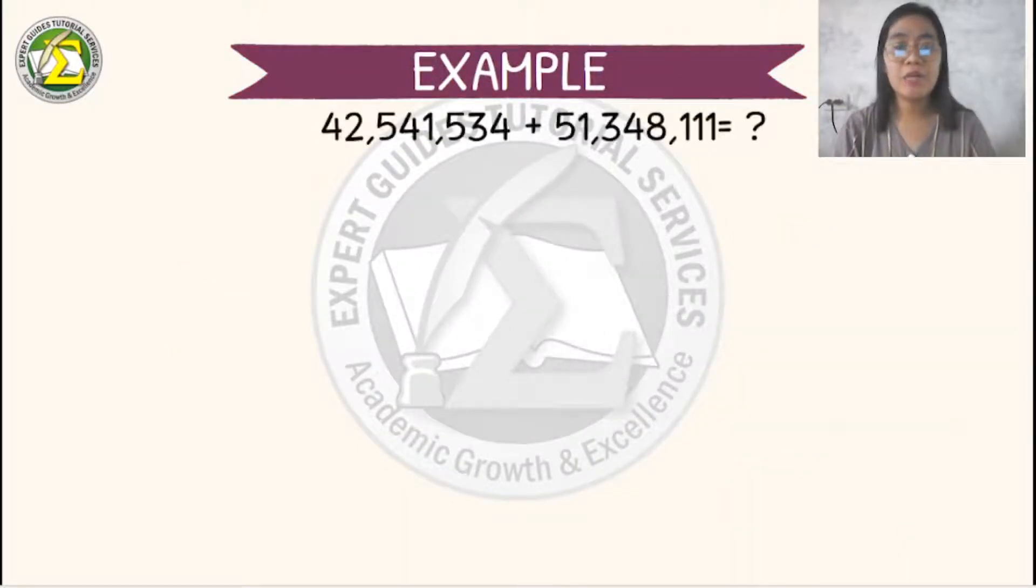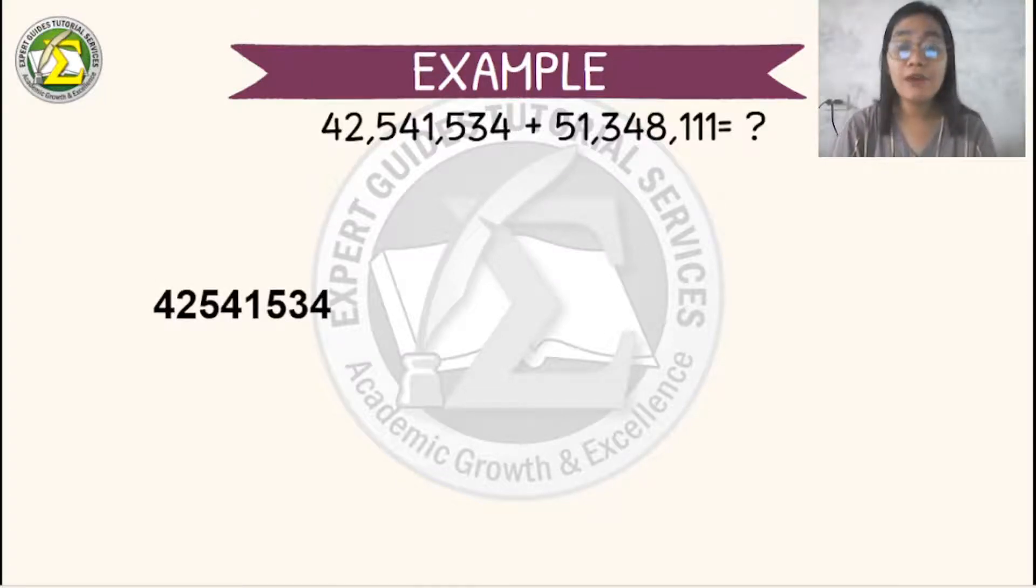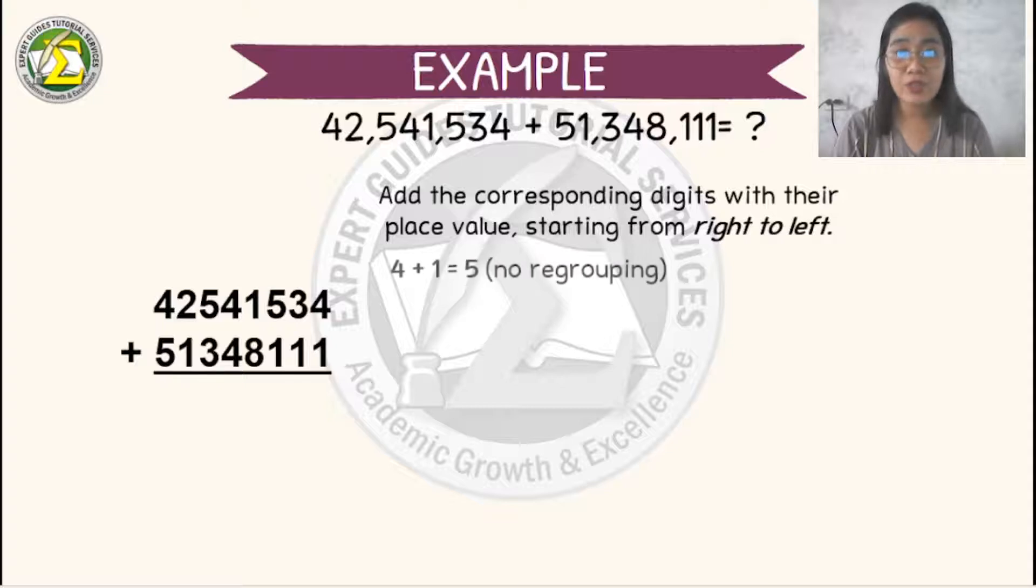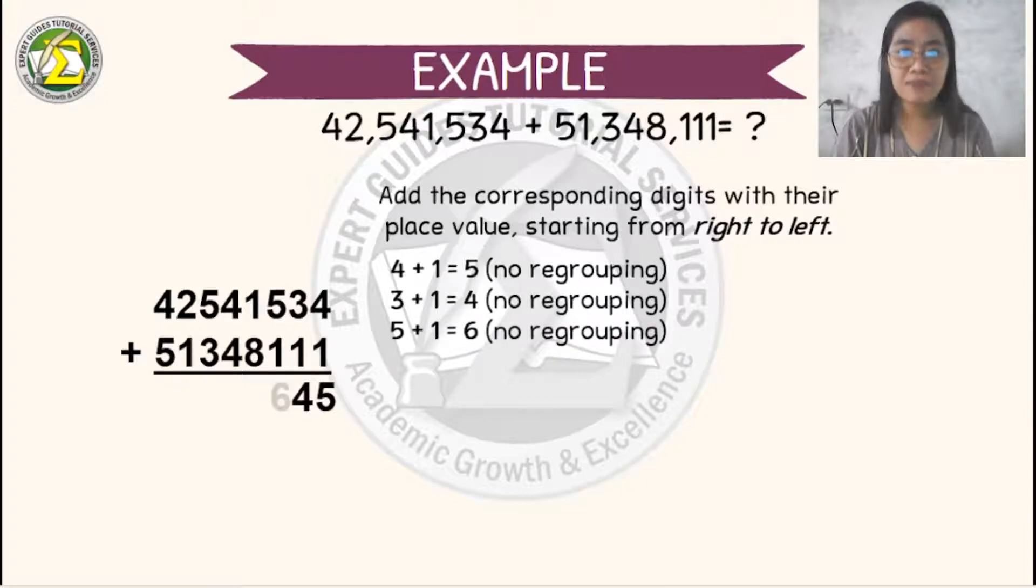Let's take another example. If we have 42,541,534 plus 51,348,111, let's add the corresponding digits with their place values starting from right to left. First, let's add 4 plus 1 equals 5. You don't need to regroup. 3 plus 1 will become 4, 5 plus 1 will be 6, 1 plus 8 will become 9.